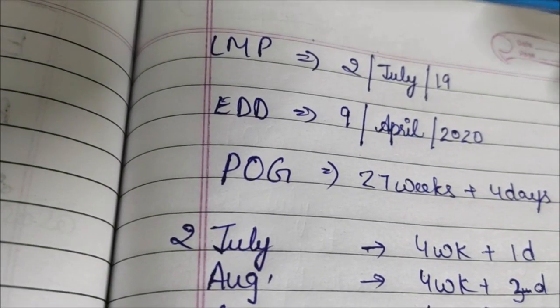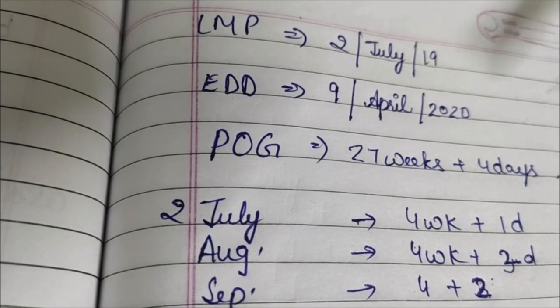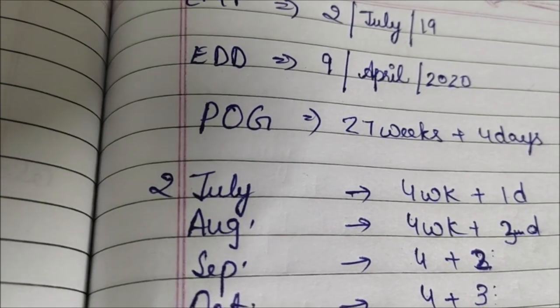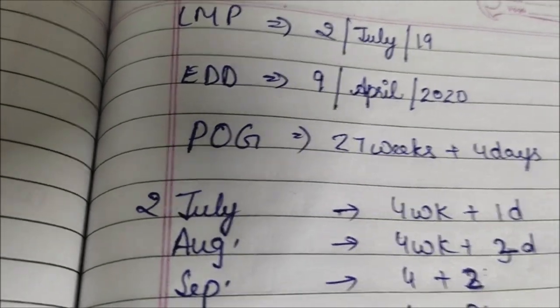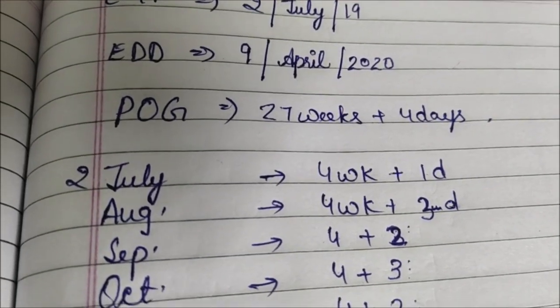I am going to tell you how to calculate the period of gestation. To calculate the period of gestation, you should know the LMP of the patient. So if the LMP of the female is 2nd July and the expected date of delivery is 9th April, then the period of gestation will be 27 weeks plus 4 days.